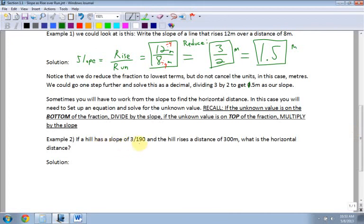If a hill has a slope of 3 over 190, so we have a hill that goes up and has a slope of 3. Remember, that's my rise over 190, which is my run. So it goes up a distance of 3 for every distance of 190. Now, this is telling me that the hill rises a distance of 300 meters. So here I have my hill. It's rising. So it must be my vertical distance of 300 meters. And it says, what is the horizontal distance? So I don't know what that value is on the bottom.